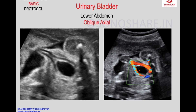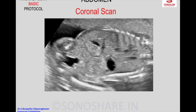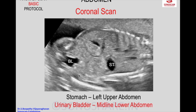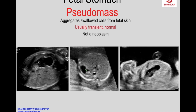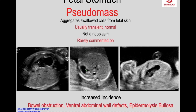This technique also helps confirm the urinary bladder, the abdomen, and the iliac bone. In the abdomen, you will see three fluid-filled structures: the fluid-filled stomach bubble in the left upper abdomen, the urinary bladder in the midline lower abdomen, and the gallbladder in the right upper abdomen. These are the three normal fluid-filled or cystic structures in the coronal scan of the fetal abdomen. If you see an additional fluid-filled structure, it is not necessarily an abnormal finding and usually we do not comment on it in the report. There is increased incidence of gastric pseudomasses when there is bowel obstruction, ventral abdominal wall defects, or epidermolysis bullosa.